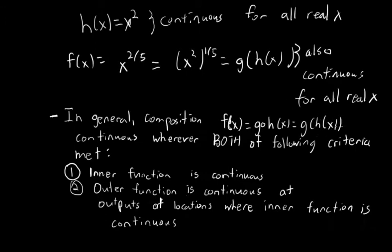So h of x is continuous at some points. We evaluate h of x at those points and plug those outputs into g of x. Those outputs from h of x become inputs into g of x. And g of x is continuous at those outputs of h of x.